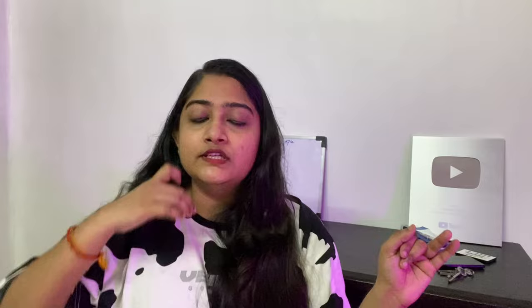The third important skill is multiplication and division rules. When you have fractions with denominators and numerators, it is easy to cancel common prime factors. This trick makes calculations much faster.